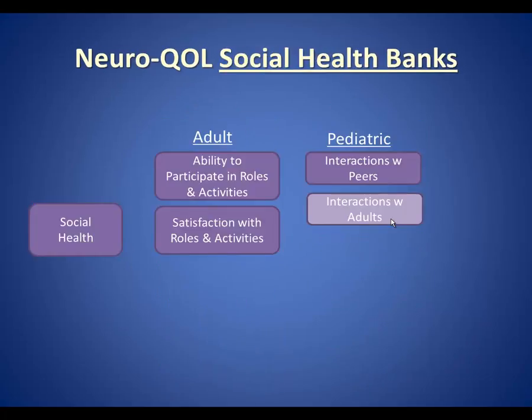There are two adult measures of social health: the ability to participate in roles and activities, and satisfaction with those roles and activities. There is only one fully developed pediatric measure, interactions with peers. The interactions with adults measure is still in development.